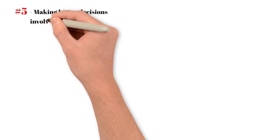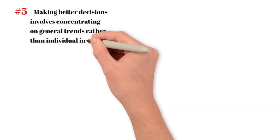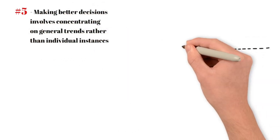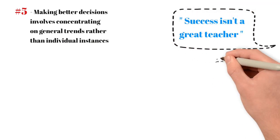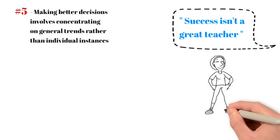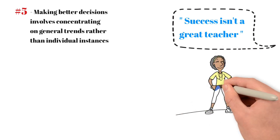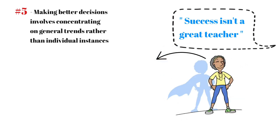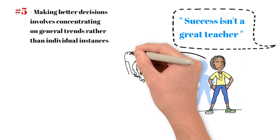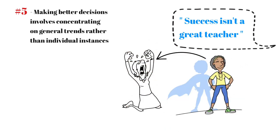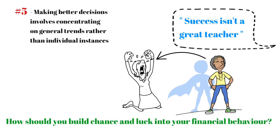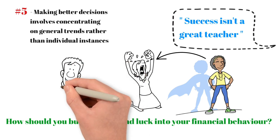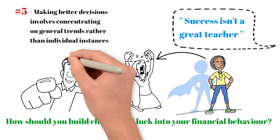Number five: Making better decisions involves concentrating on general trends rather than individual instances. Bill Gates once humorously remarked that success isn't a great teacher. According to Gates, achieving success can mislead intelligent individuals into neglecting the influence of luck, leading them to believe they're invincible. Ironically, this mindset is a reliable method for guaranteeing failure. So how should you build chance and luck into your financial behavior? Well, here's what you shouldn't do: Obsess over the examples of specific individuals.